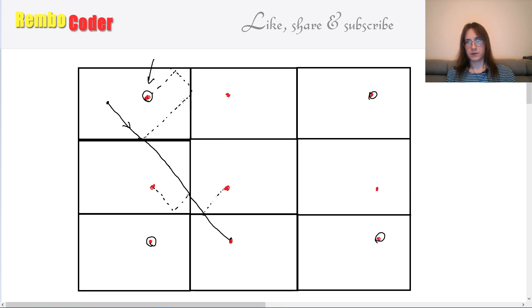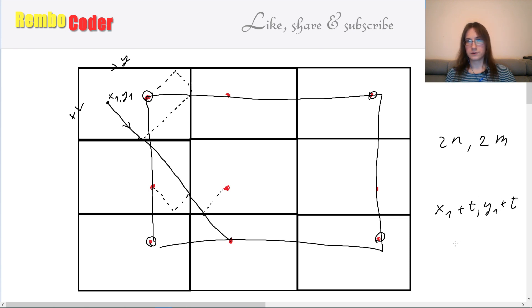Now suppose that I fixed this type. The goals of such type form a grid with shift by 2n, 2m—2n by x, 2m by y. So if the x-axis starts here and the y-axis starts here, let's say that x1, y1 is the initial coordinate of our ball. And it moves according to such equation: x1 plus t, y1 plus t, where t is the time that have passed since the beginning of the process.